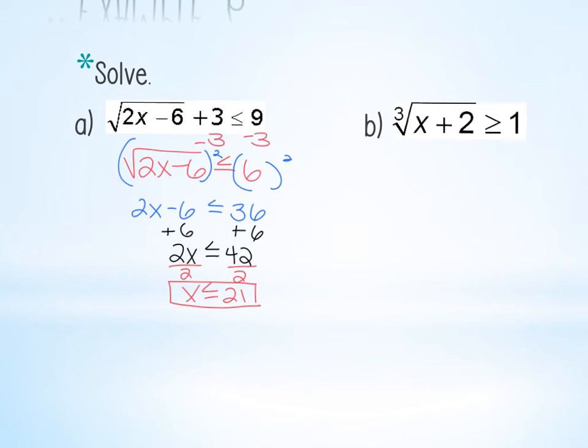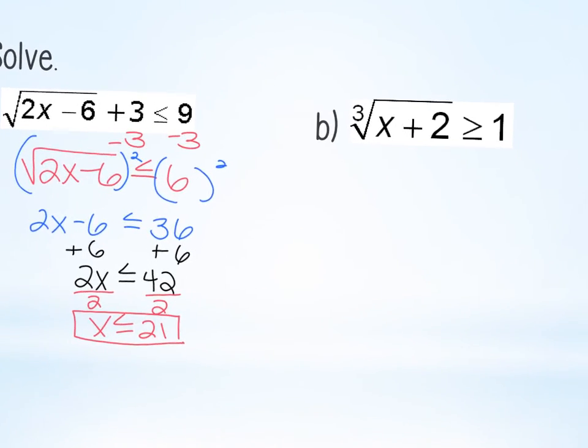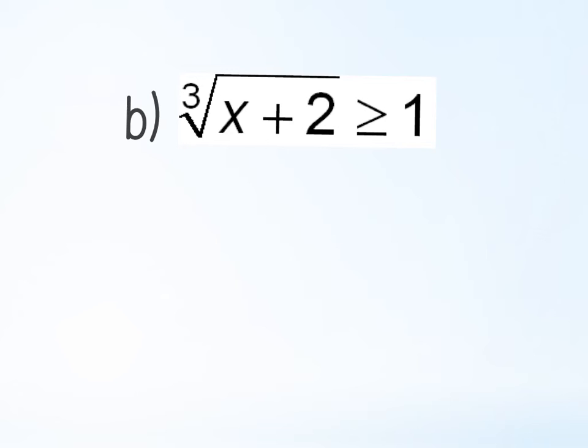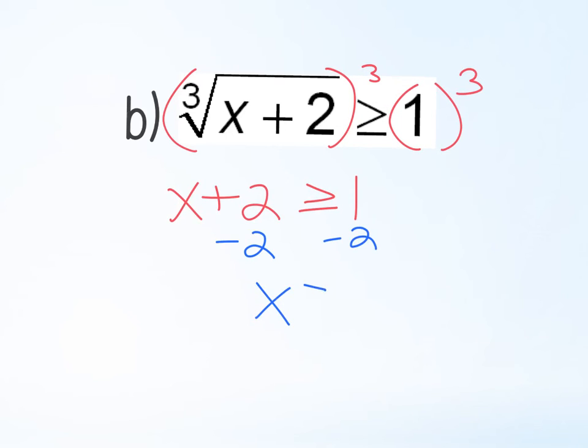Questions on that one? Alright, now B. What do I have to do? Is it isolated already? Yeah. Which means my first step is going to be to do what? Cube both sides. So x plus 2 is greater than or equal to what's 1 times 1 times 1? 1. So subtract the 2. x is greater than or equal to negative 1. Easy, right? That's not hard. All you're doing is adding the inequality. And you just got to remember, should there have been like a negative 1 on the front of that and I divided both sides or multiplied both sides by negative 1, you just got to remember to switch the sign. That's the only catch with it.